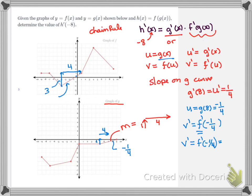So 3 fourths gets multiplied by g prime, 1 fourth. And my answer is 3 over 16.